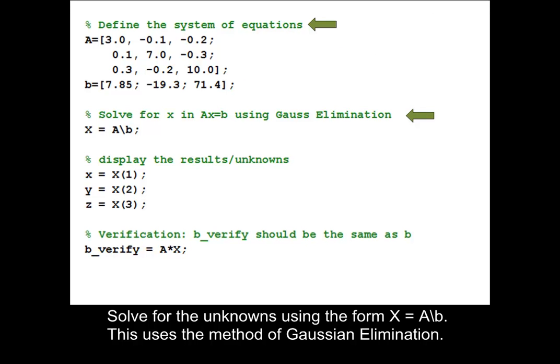Solve for the unknowns using the form X equals A backslash B. This uses the method of Gaussian elimination.